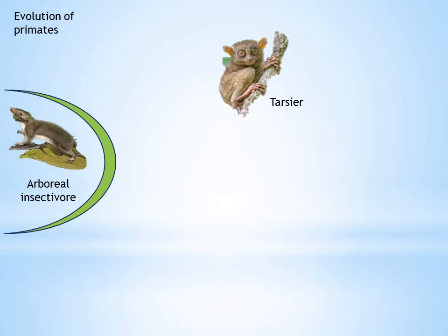Members of order Proximi include tarsiers. Tarsiers are arboreal, nocturnal, insectivorous primates found on islands. Notable changes seen in tarsiers are: eyes are large and directed forward with binocular vision. The limbs have five digits with adhesive pads, making it easy for climbing trees. Hind limbs are longer with elongated tarsals.